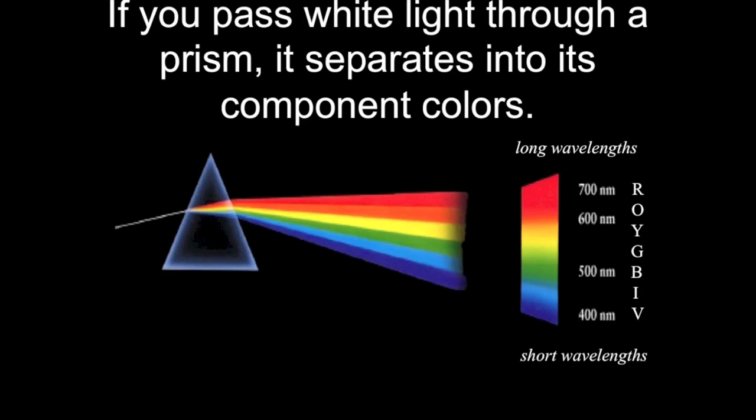Some people like to remember the order of the colors as ROYGBIV: red, orange, yellow, green, blue, indigo, and violet, going from longer wavelengths to shorter wavelengths, lower energies of light to higher energies of light.